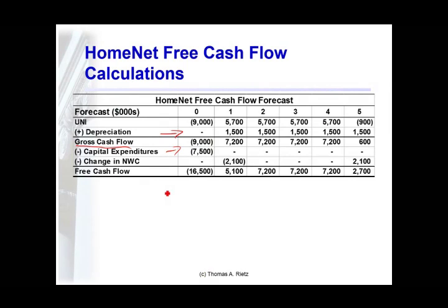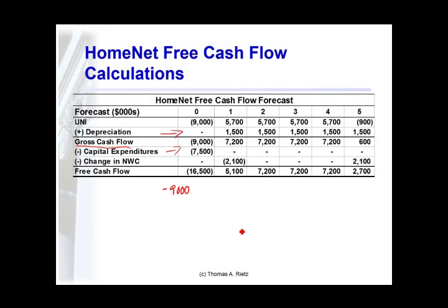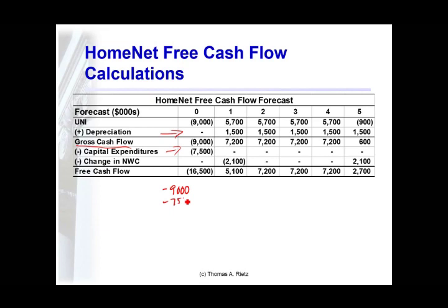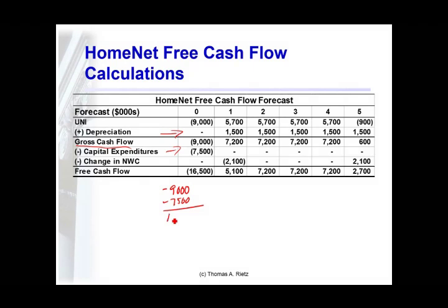In the first year, our unlevered net income was $9,000 in research and development expenses after we subtract the tax break from doing that, a $7.5 million capital expenditure, and we have this $16.5 million investment at the beginning of the project.